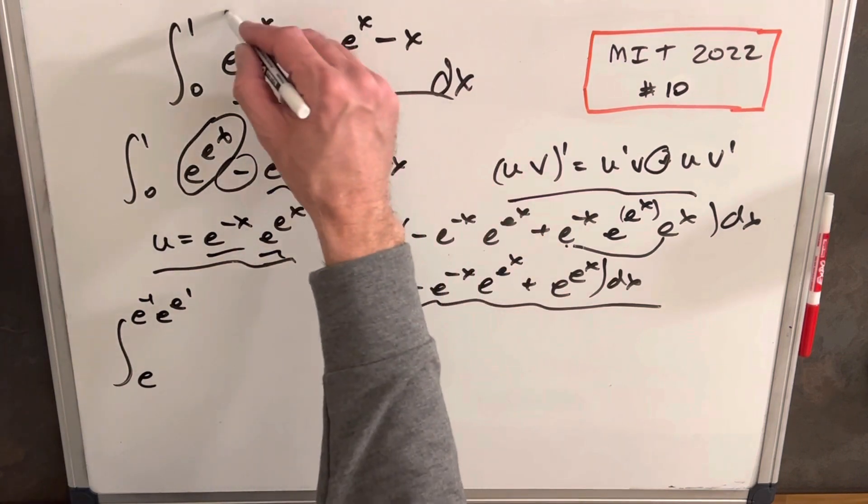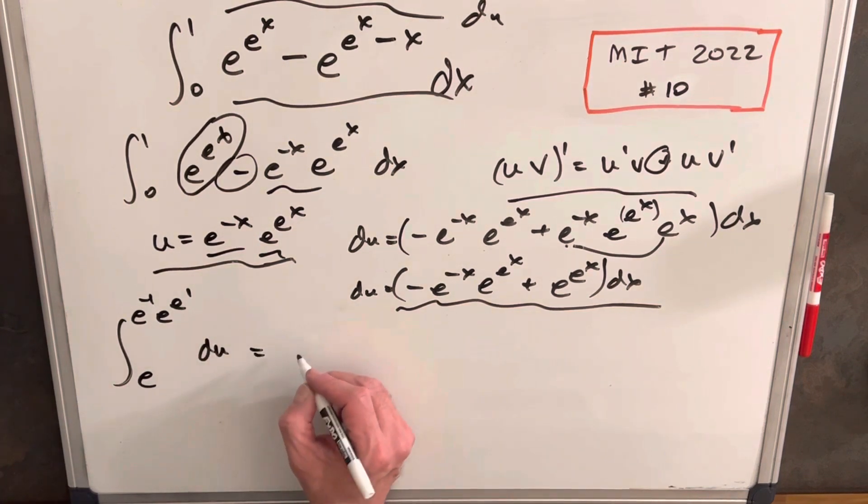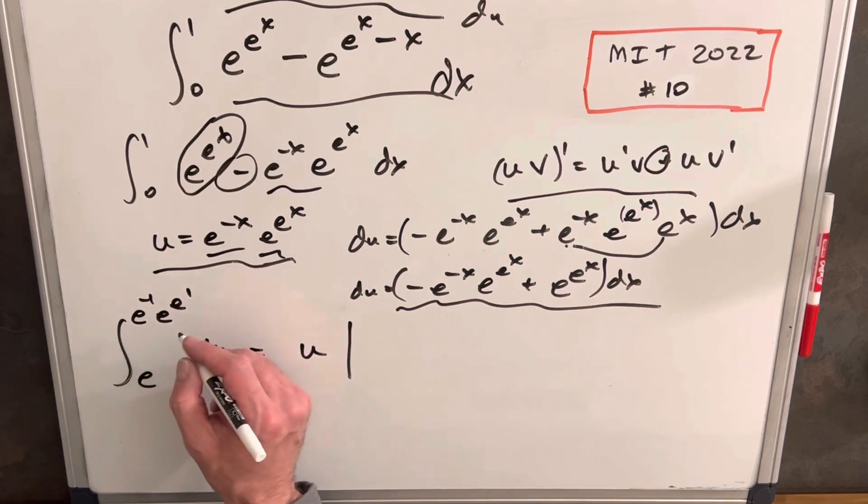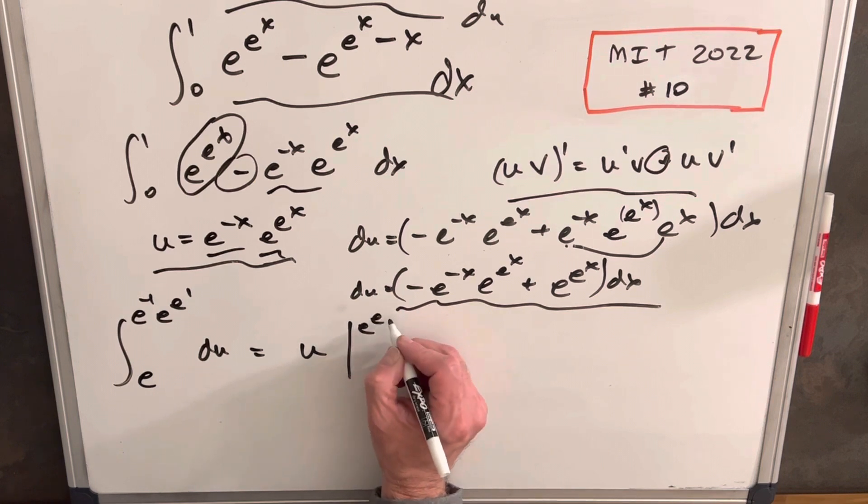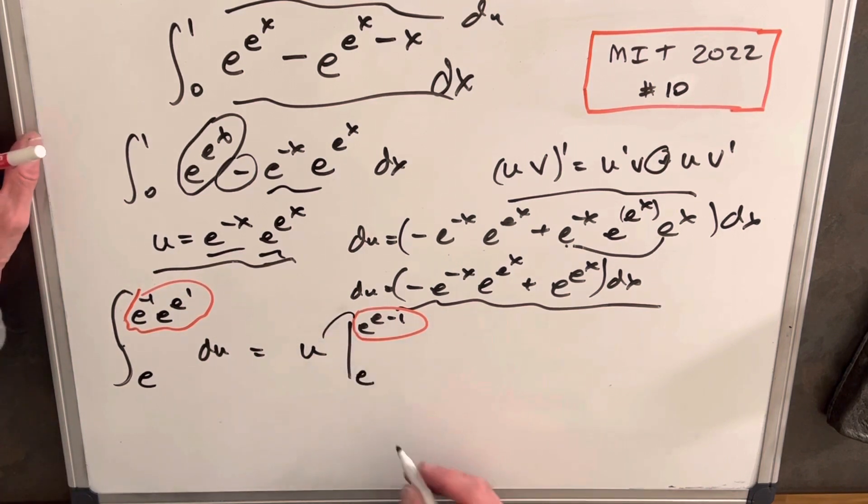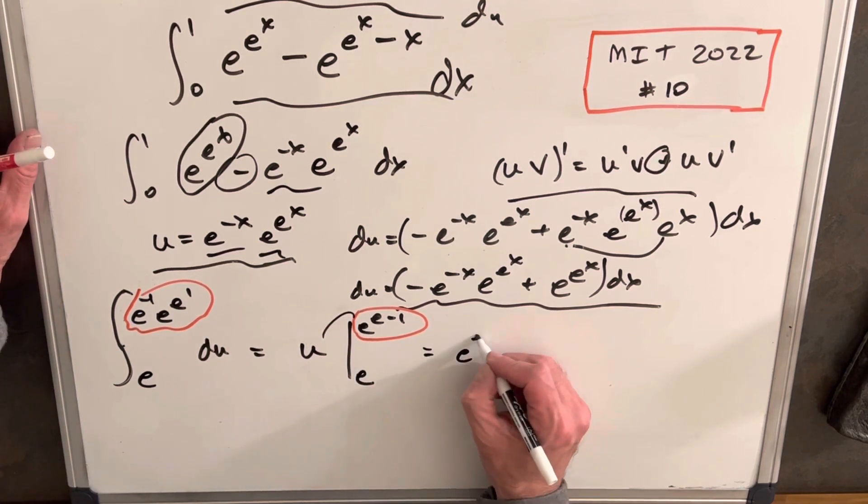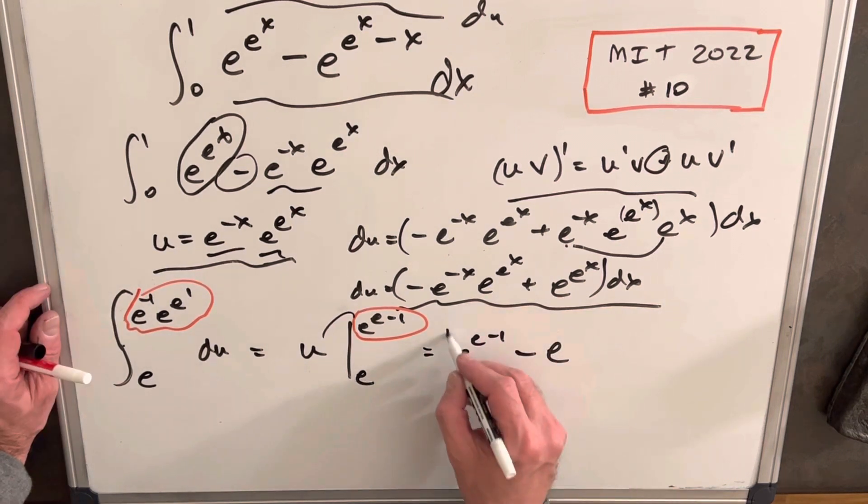This whole integral is just du, so we're actually just integrating du, which is the easiest integral in the world. That's just u evaluated from e^(e-1) to e. Now we substitute and get e^(e-1) - e. That's our solution.